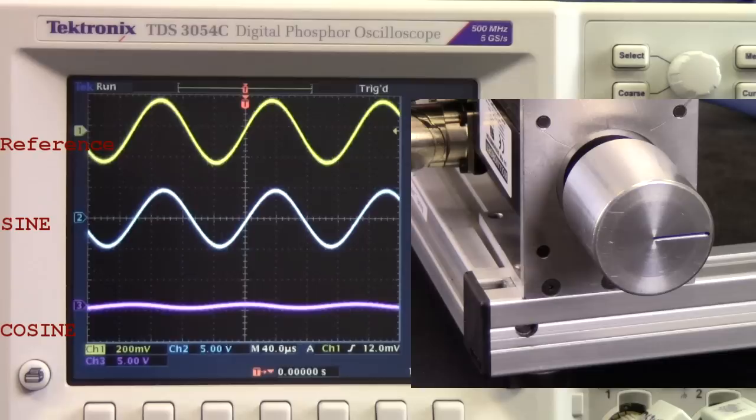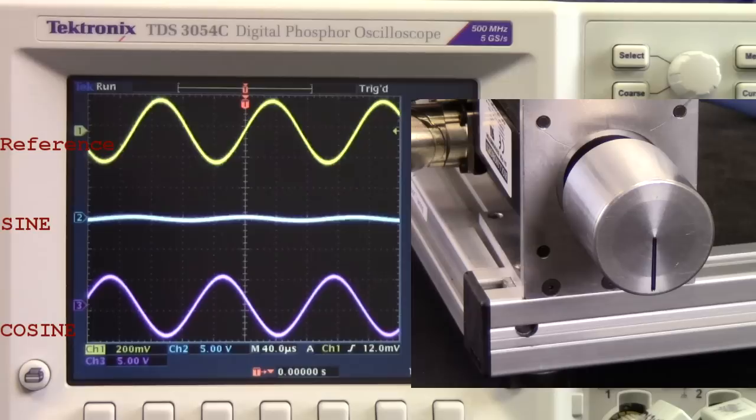Continuing to 180 degrees, sine increases to zero, while cosine, now out of phase, increases to peak amplitude.